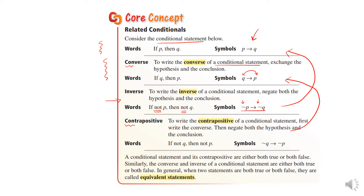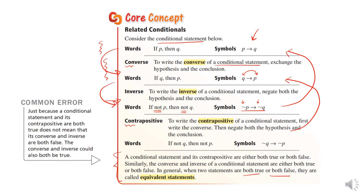This also goes over whether statements are true or false. If two statements are both true or both false, they're called equivalent statements. Just because a conditional statement and its contrapositive are both true does not mean that the converse and the inverse are both false — the converse and inverse could also both be true. You have to look at each statement on its own.